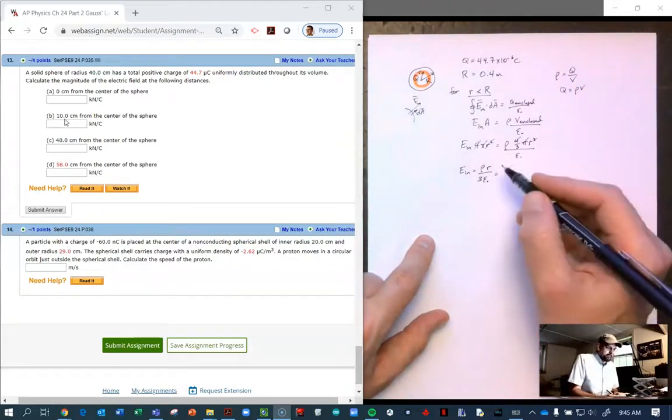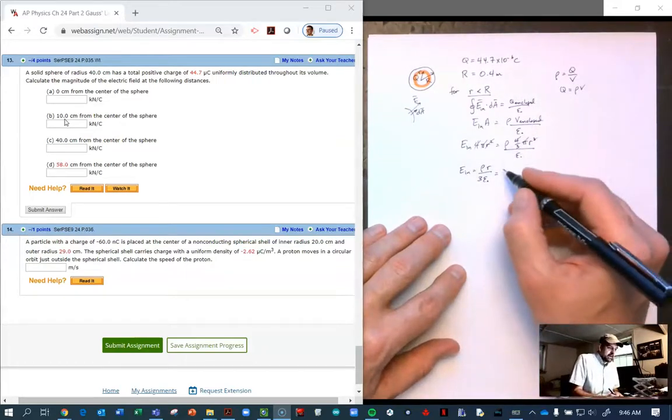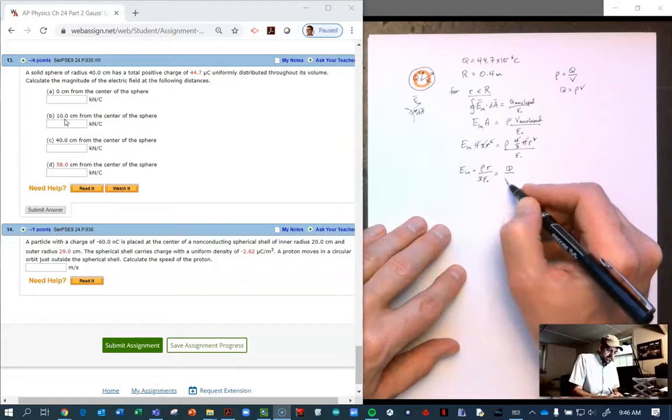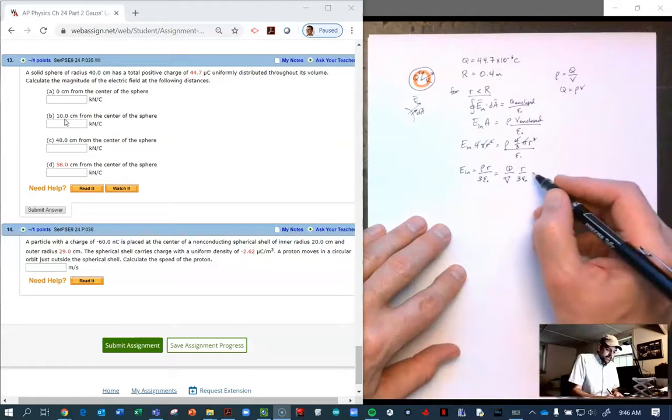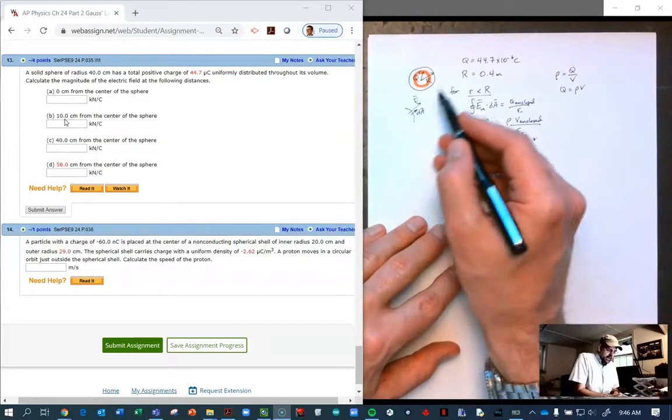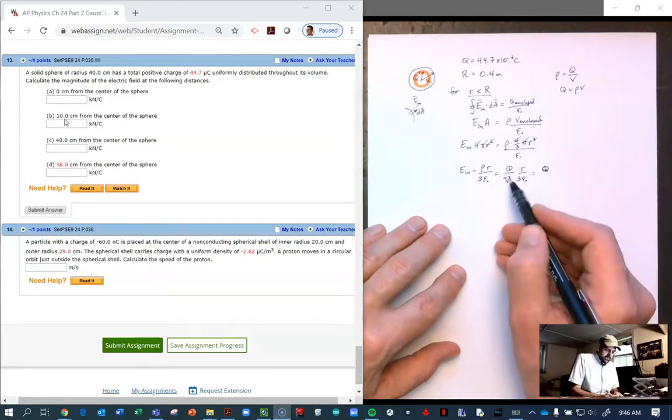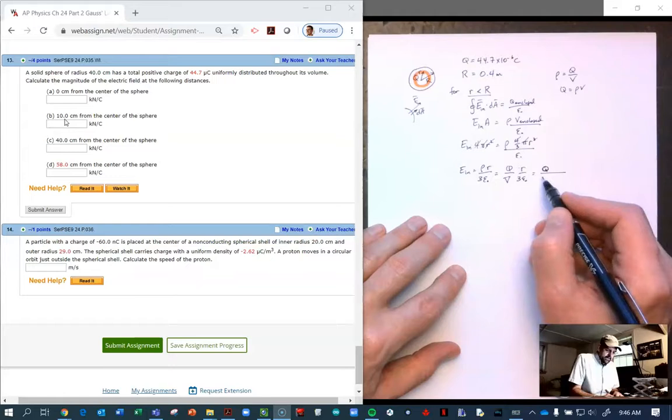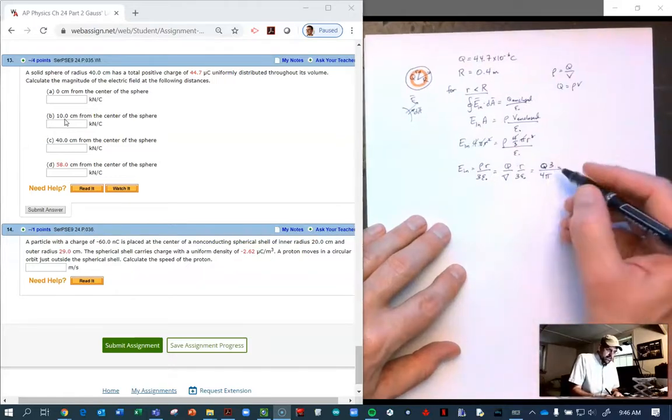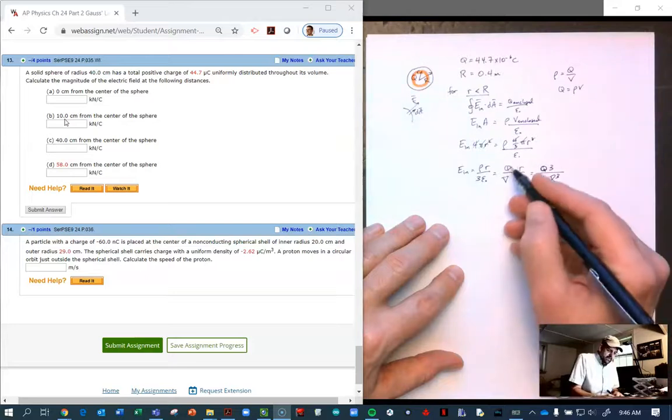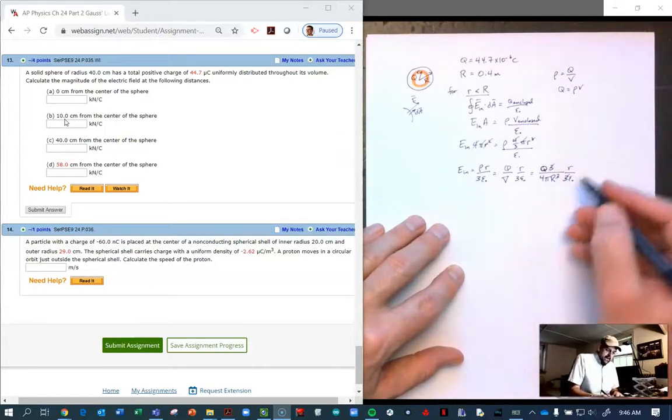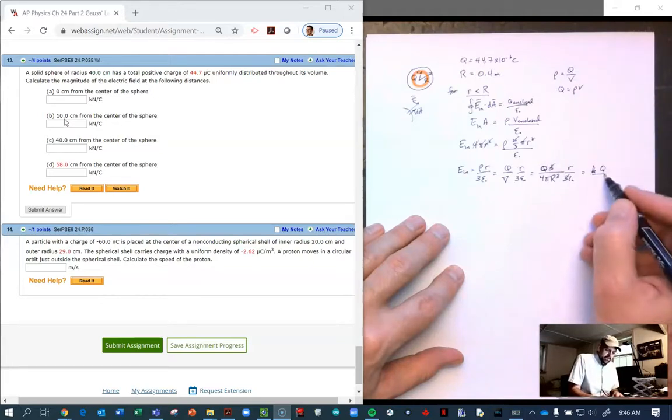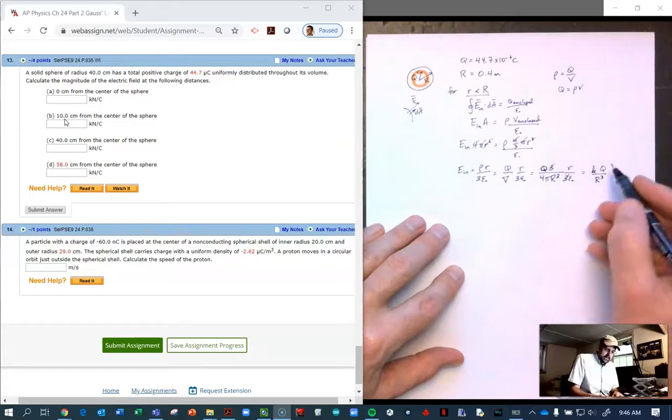We could stop there if we wanted to do the calculations. We could calculate what the density is by taking the total charge Q divided by the total volume. So the density is Q over the big volume, total volume, times r over 3 epsilon naught. And the volume of the big sphere, the total sphere, is 4 thirds pi big R cubed. The threes cancel, and 4 pi epsilon is K. This becomes K big Q over R cubed.